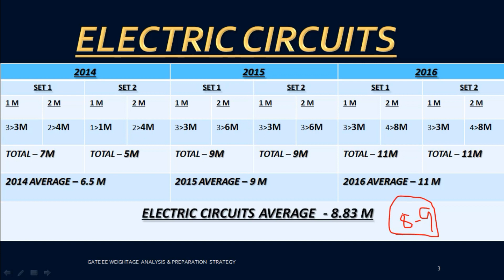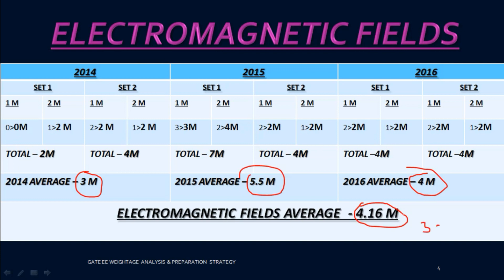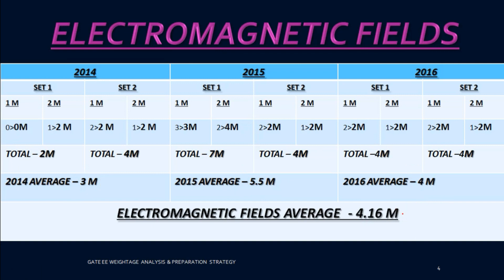The next subject is Electromagnetic Fields. This is one of the least important subjects if you are in the final days. If you have a lot of time you should cover everything, but the weightage data shows the 2014 average was three marks, 2015 was 5.5, and 2016 was 4.16. You can expect about three to four marks from this subject.